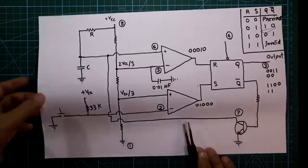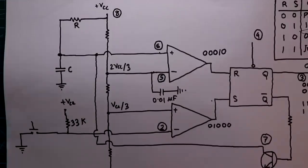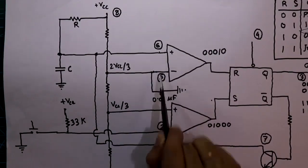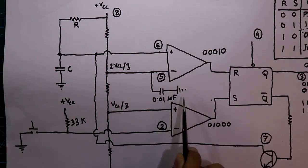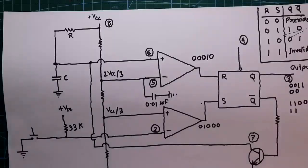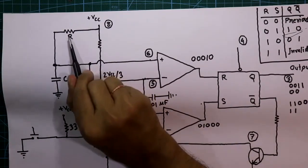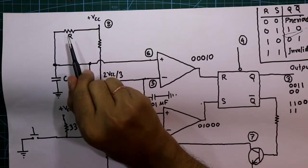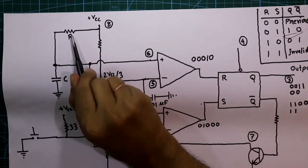Pin number six and pin number seven are connected together. A 0.01 microfarad capacitor is connected between them and then connected to ground. Between pin number six and VCC, a resistor R is connected — this value could be anything; I'm going to use a 100 kilohm resistor.